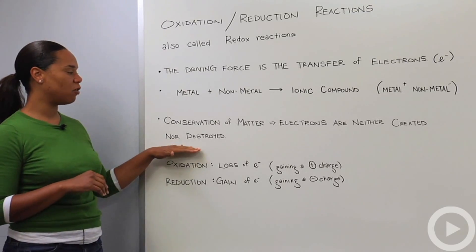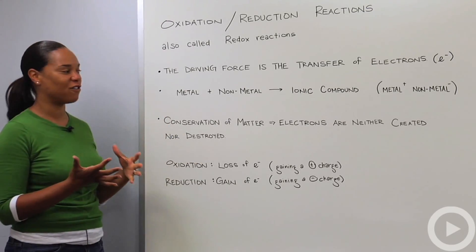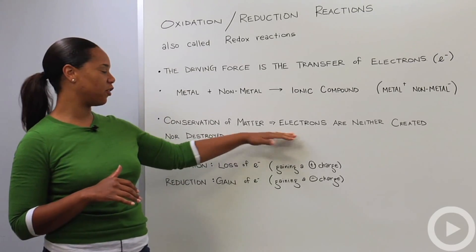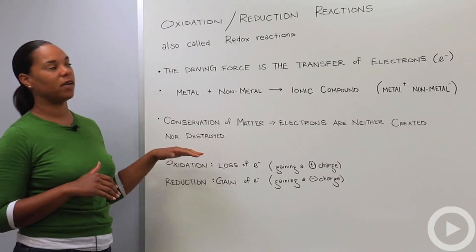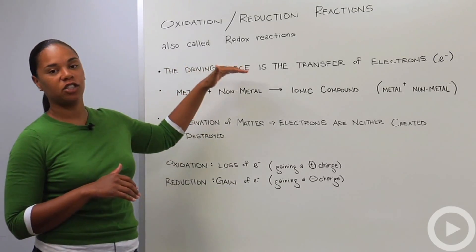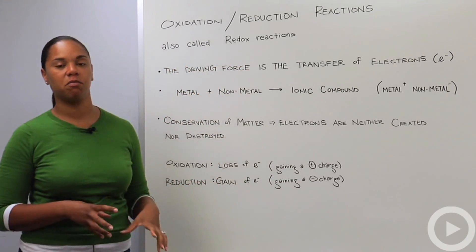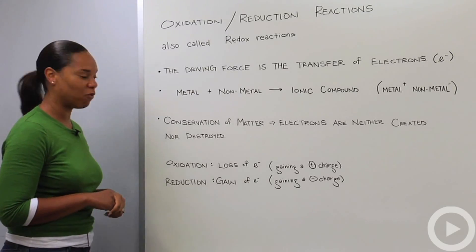Because we know that the conservation of matter tells us that electrons are neither created nor destroyed, that means that in a redox reaction, oxidation and reduction must be coupled. So you cannot have one without the other.